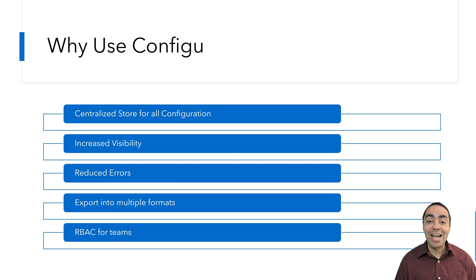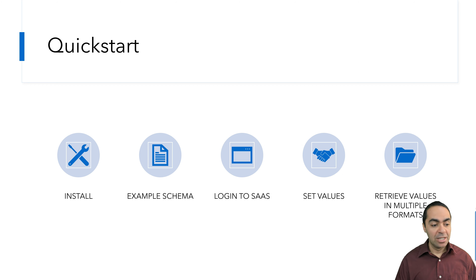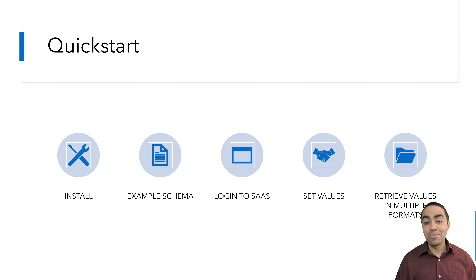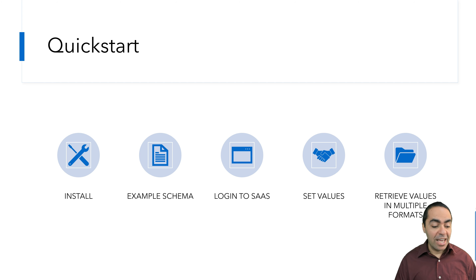You want to make sure you know who has access to what kind of configuration and where. In our quick start, we're going to install ConfigU, see an example schema file, log into the SaaS, and then set some values and retrieve values in multiple formats.